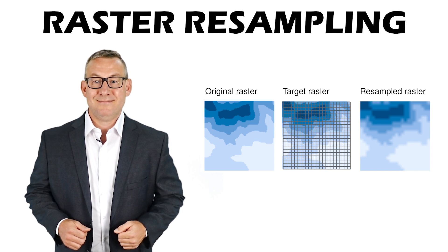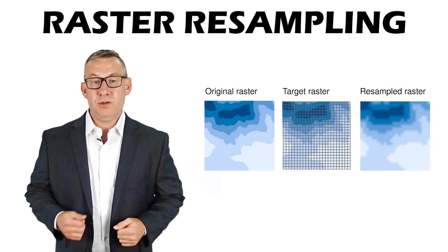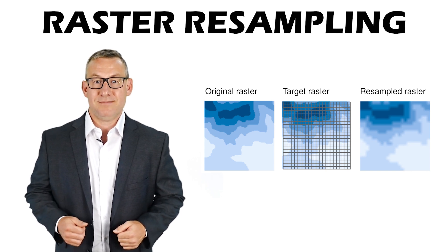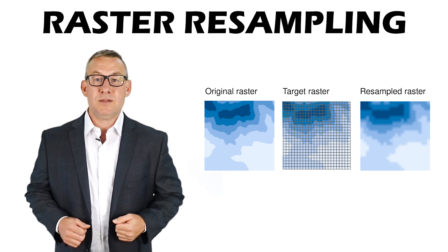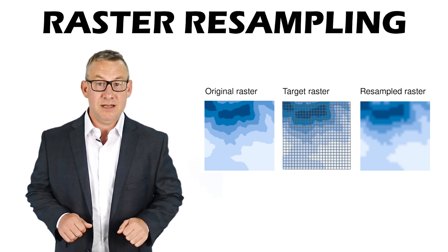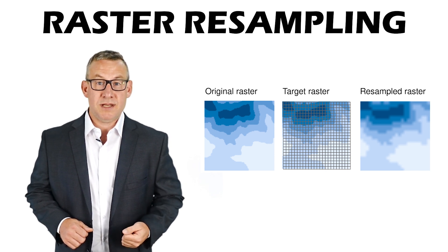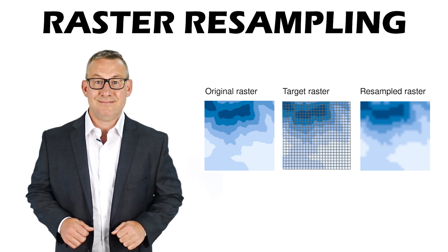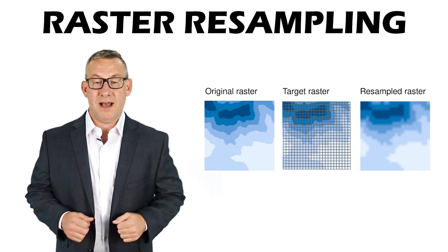Raster resampling: resampling to a larger cell size will reduce accuracy and file size. Resampling to a smaller cell size will increase file size and not change accuracy. Upsampling to a smaller cell size has no inherent benefits. Resampling to a larger cell size will reduce file size.